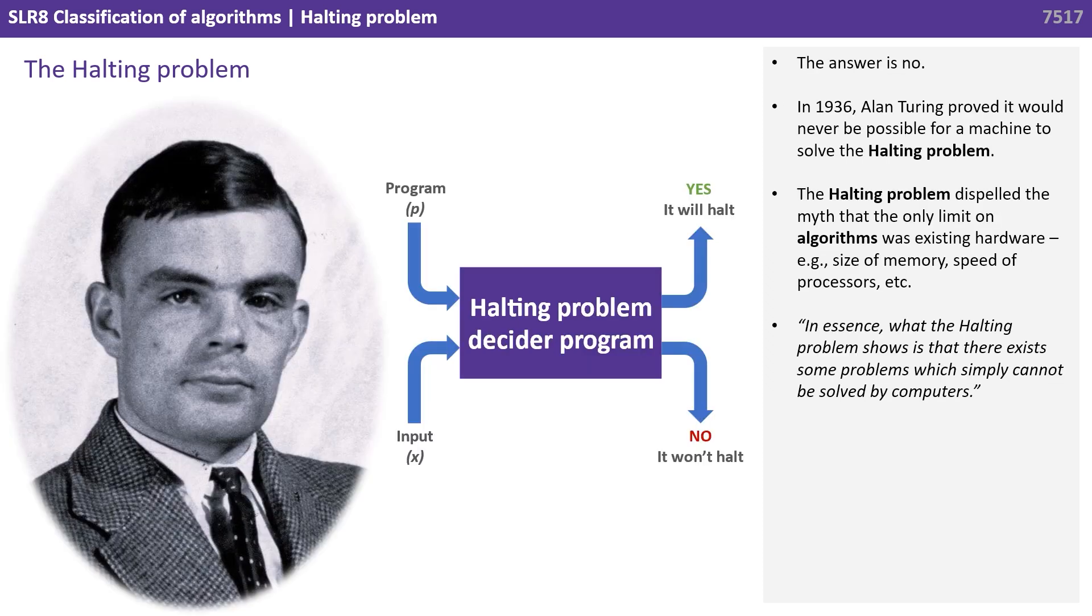The simple answer is no, and it was Alan Turing who, in 1936, proved that a machine for solving the halting problem could not exist. The halting problem dispelled the belief held up until this point that only limits on algorithms were existing hardware, for example, the size of memory or the speed of processors.